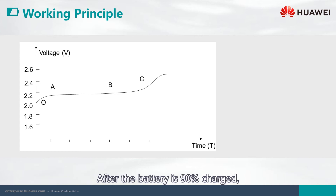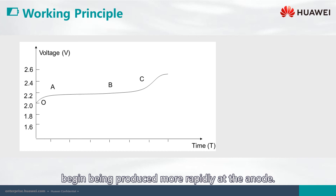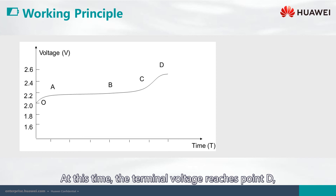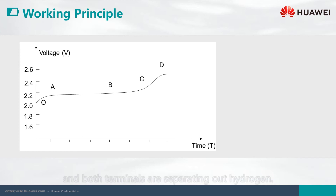After the battery is 90% charged, as a side effect, separated hydrogen ions begin being produced more rapidly at the anode. At this time, the terminal voltage reaches point D, and both terminals are separating out hydrogen.